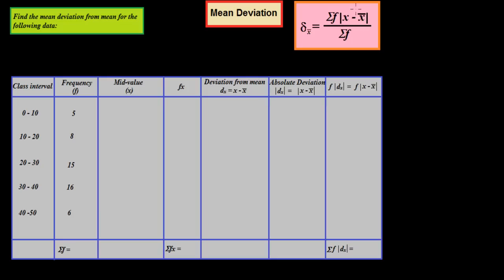In this formula, x̄ is compulsory to find out first. For x̄ we need the mid value of each class interval. For example, 0 plus 10 divided by 2 equals 5. Similarly, 10 plus 20 divided by 2 gives us 15 as the mid value.